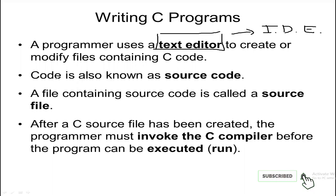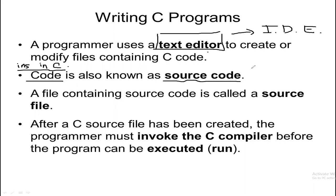Code is the instructions written in some programming language. We are learning C, so code is instructions in C programming language. Source code is that code written together in a text editor or a text file. In a text file we put some instructions which are valid in C. That is called source code.